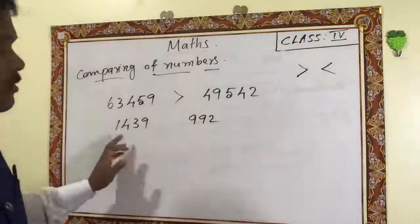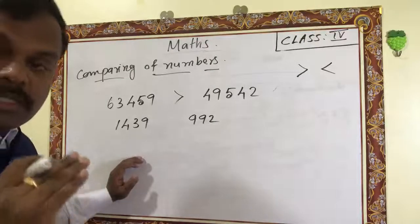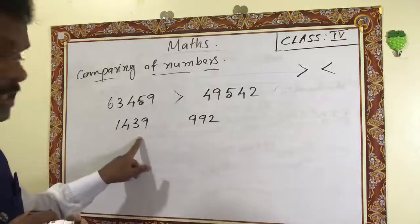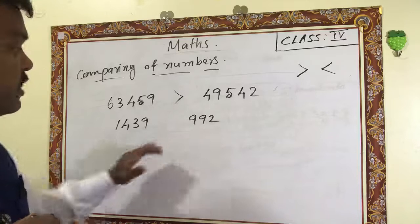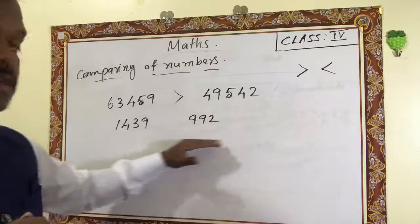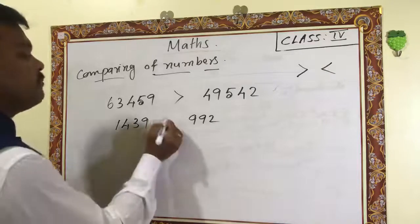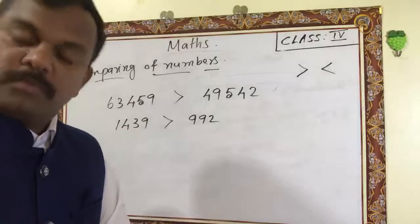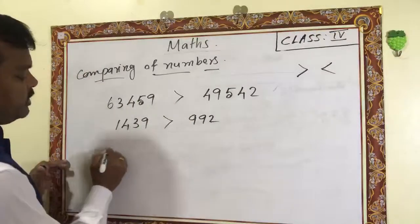Sometimes one number has four digits and another has three digits. Count: one, two, three, four — four digits; one, two, three — three digits. The digits are not the same. The four-digit number is always the greater number. Whichever has more digits is the greater number.